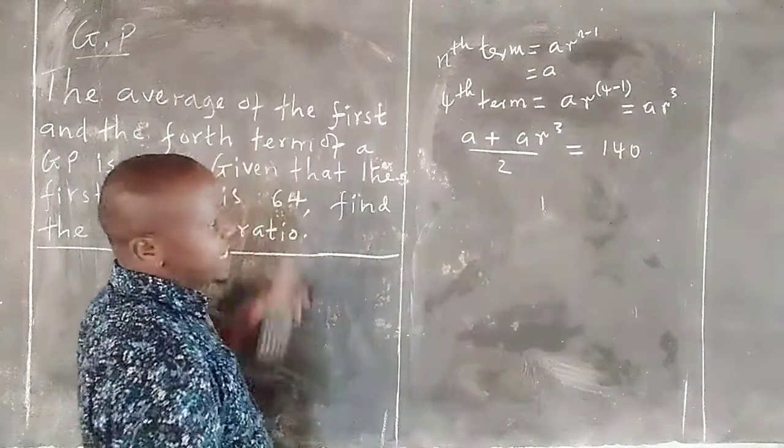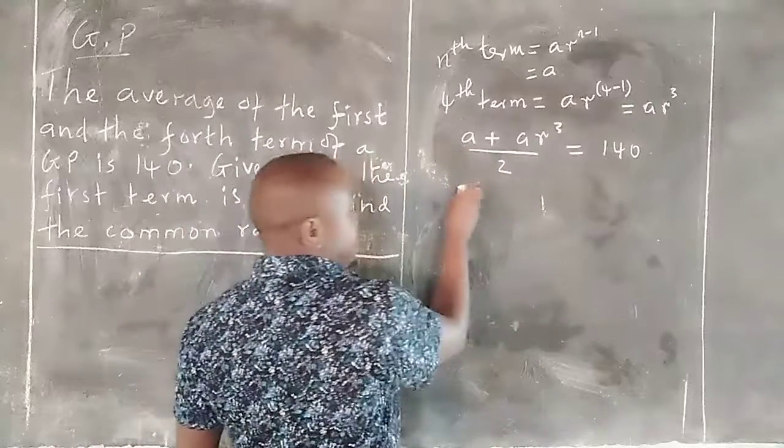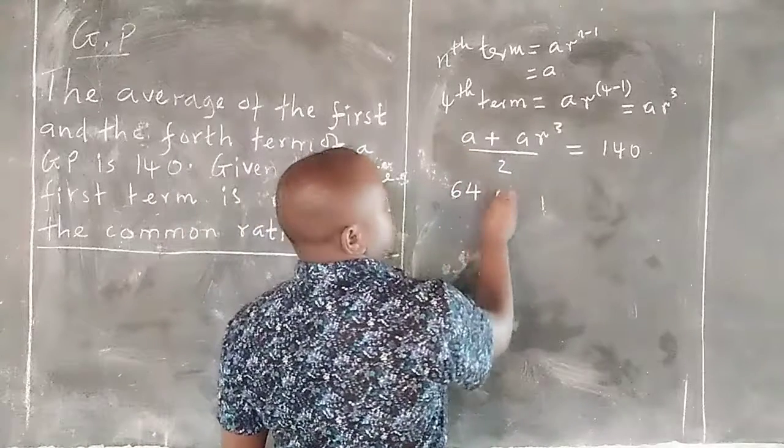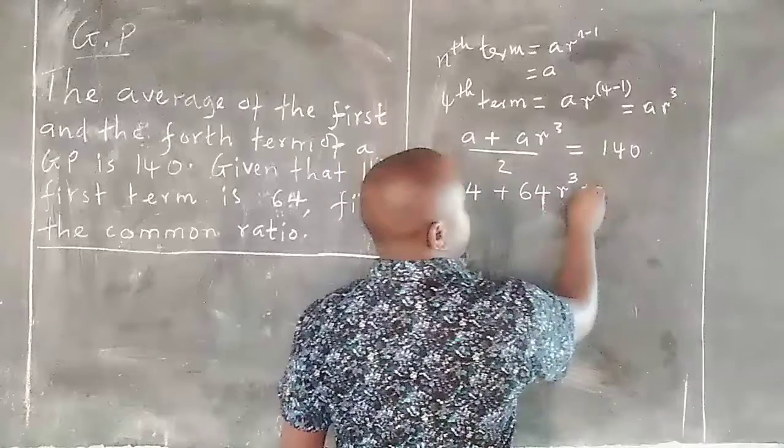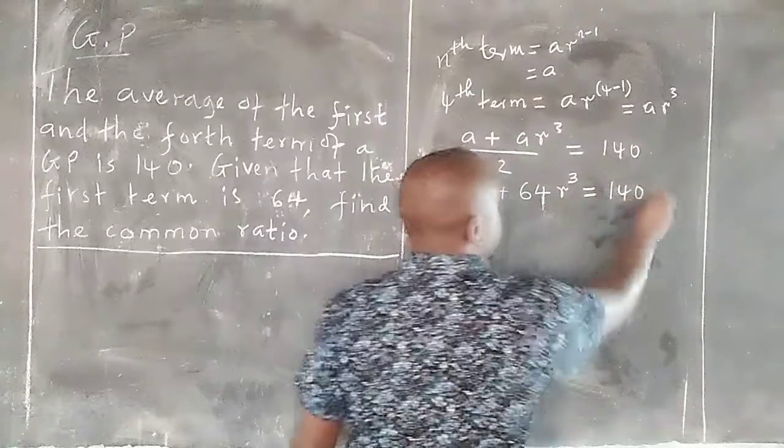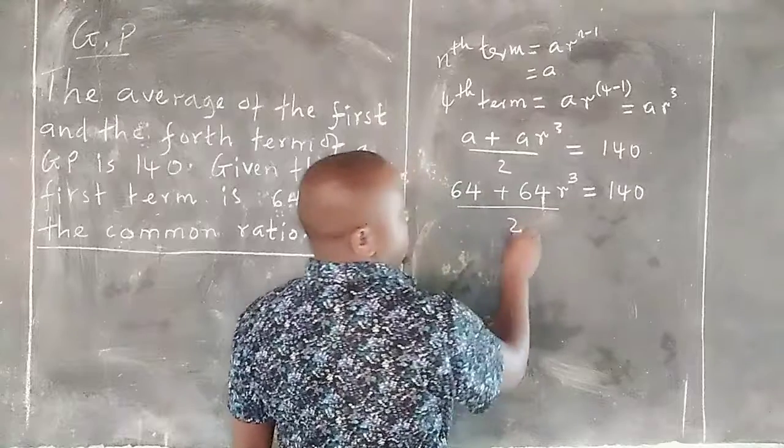The first term is given as 64. Therefore here we have 64. So 64 plus 64 r power 3 equals to 140 when this one has been divided by 2.